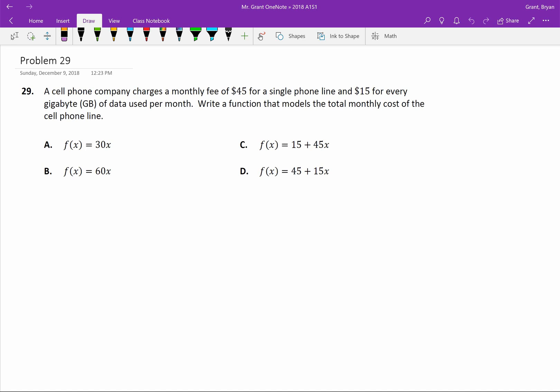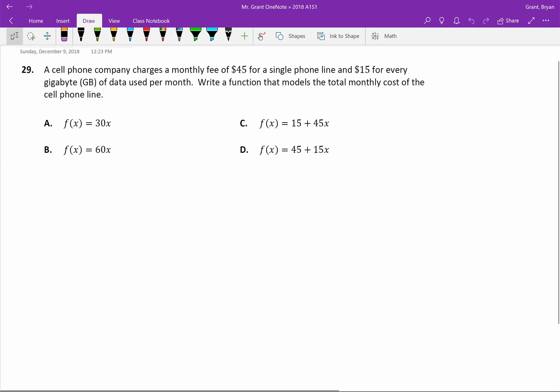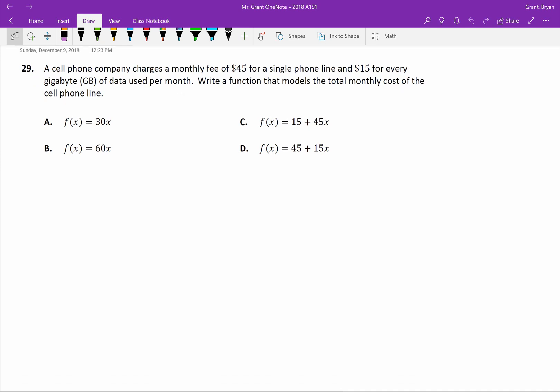Welcome back to your Algebra 1 semester one final exam review. We're working problem 29 which is talking about a cell phone company, and it's a fairly realistic question. If you ever go with your family to buy a cell phone, there's usually a cost for the phone and then there's actually a cost for the data as well, right, how much your family uses.